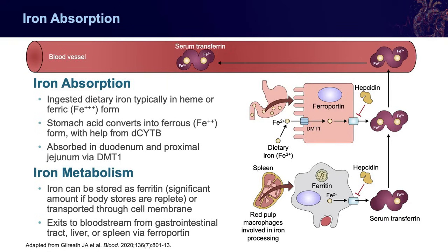As shown in this schematic, after iron enters the GI tract it uses ferroportin to be transported throughout the system, and then ultimately is stored in the reticular endothelial system where it can be used by end tissues.